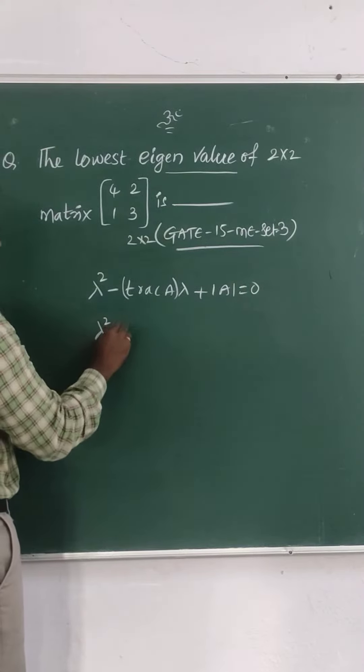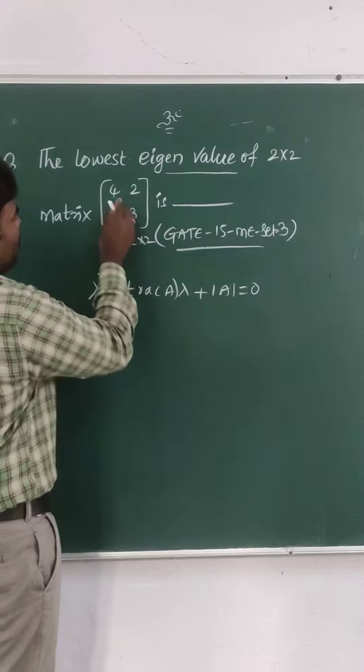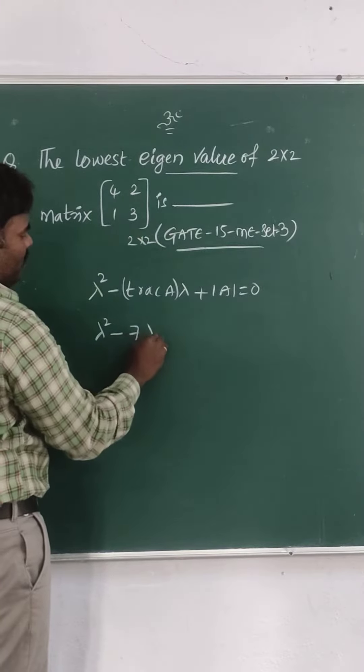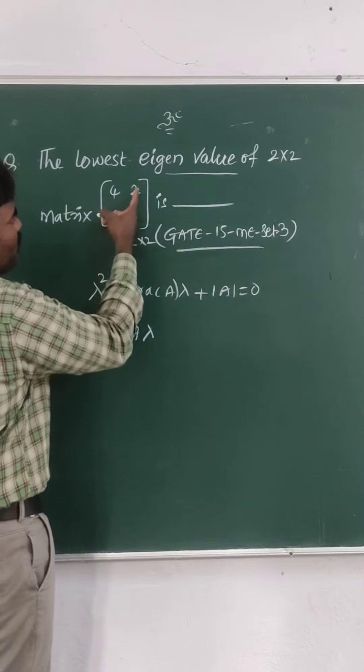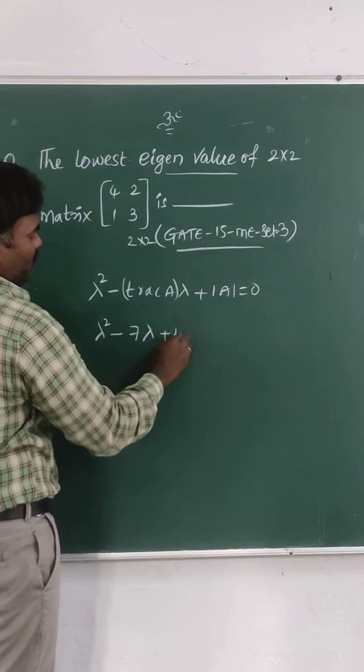So, lambda square is lambda square minus trace. Trace means sum of the principal diagonal elements, that is 7 into lambda plus det A. That means 4 threes are 12, 12 minus 2 is 10. So, plus 10 is equal to 0.